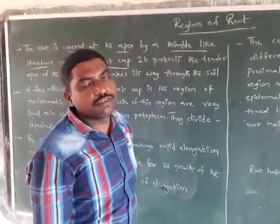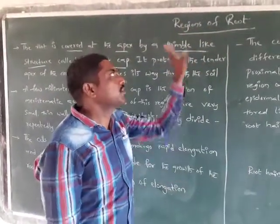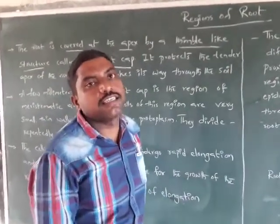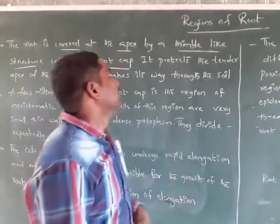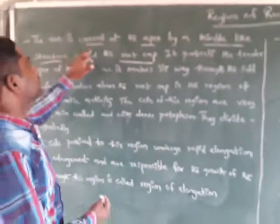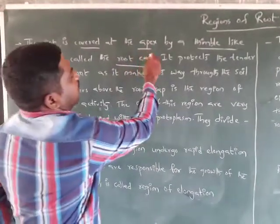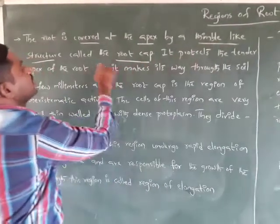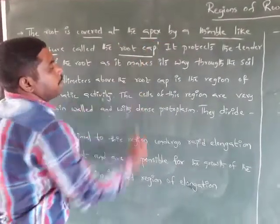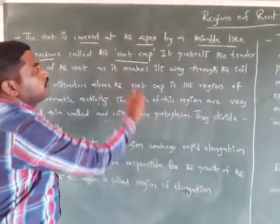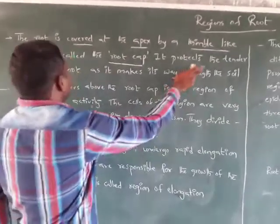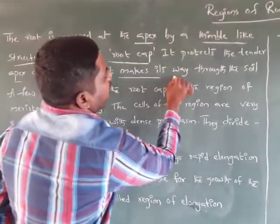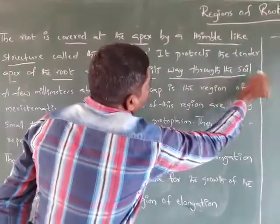Regions of root. In this video, we have to discuss the regions of root — how many regions are there and what those regions are. The root is covered at the apex by a thimble-like structure called the root cap. It protects the tender apex of the root and helps it make its way through the soil.